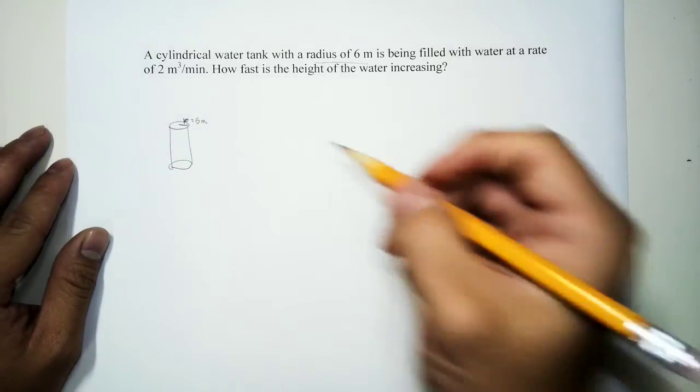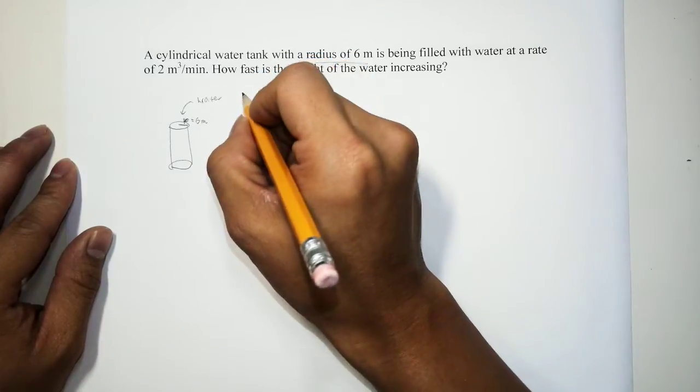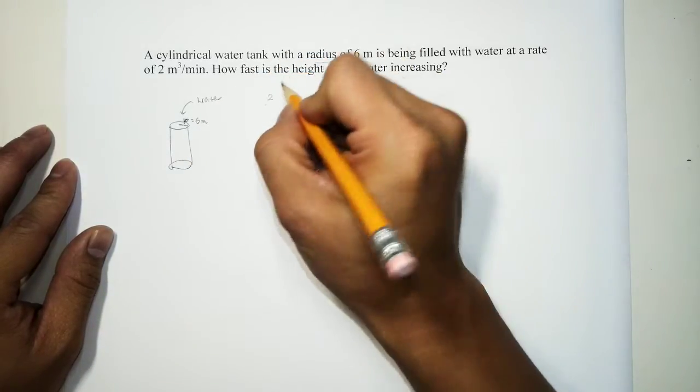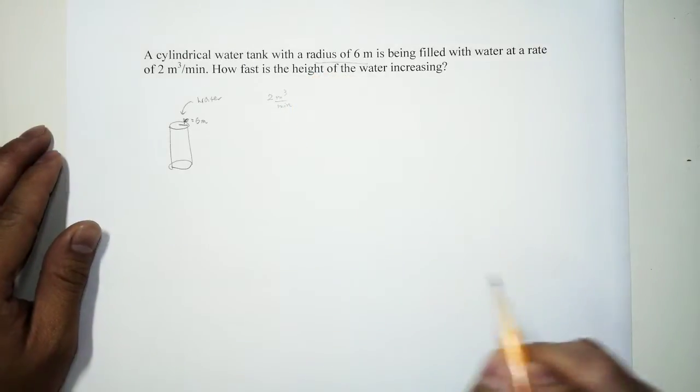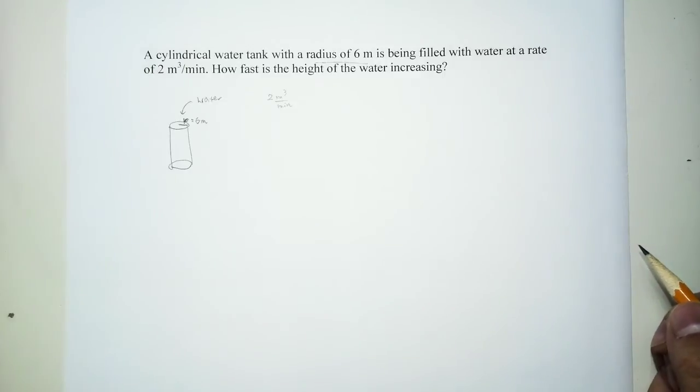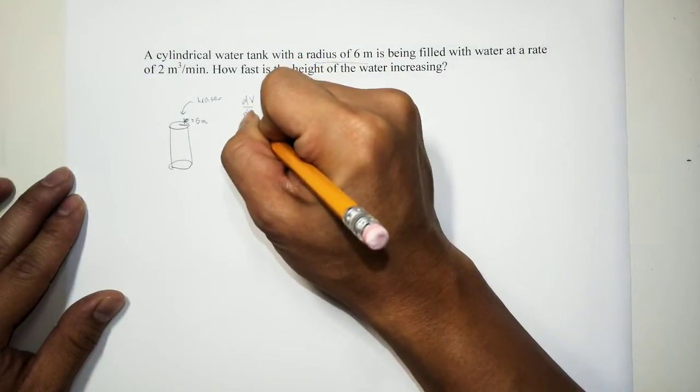And we're gonna add water in here, so water is gonna come in here at a rate of two meter cube per minute. Okay, now how do we label this? We can label this by saying it is dV/dt.